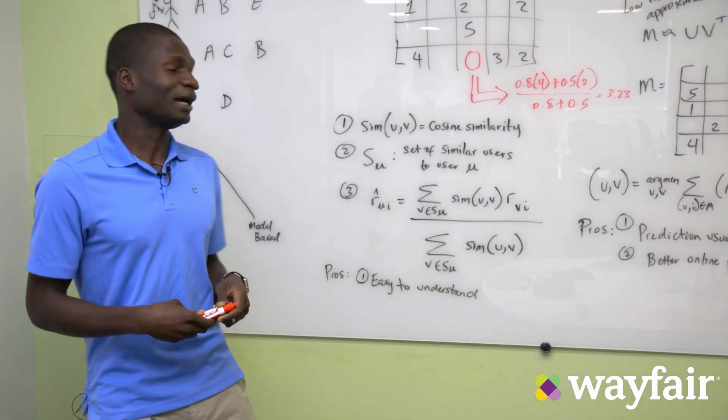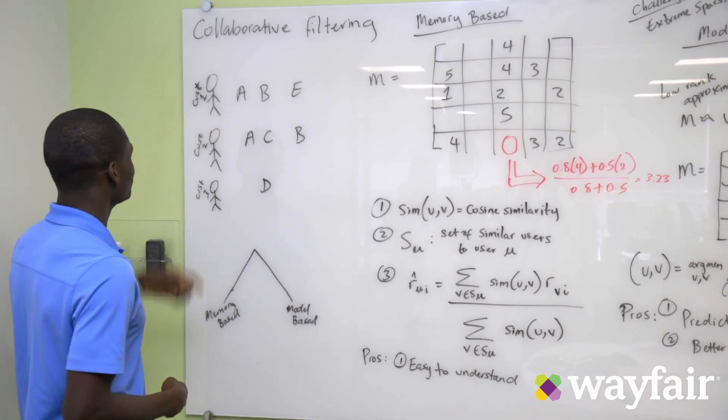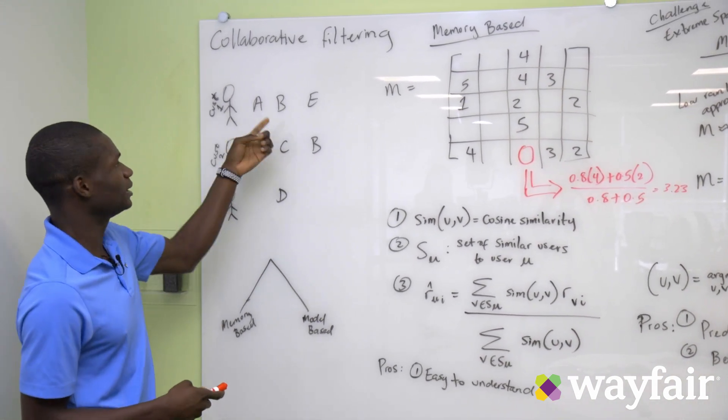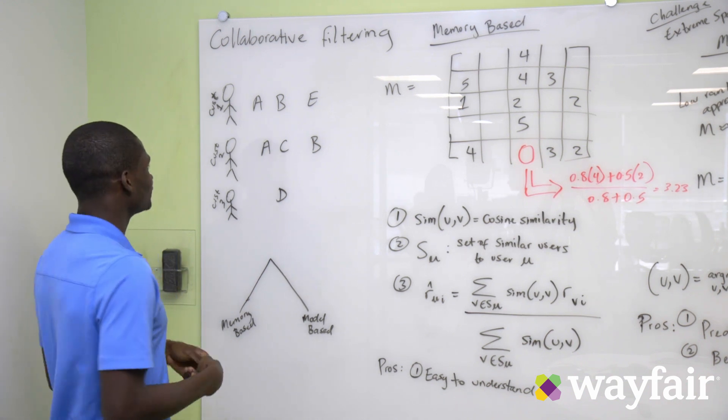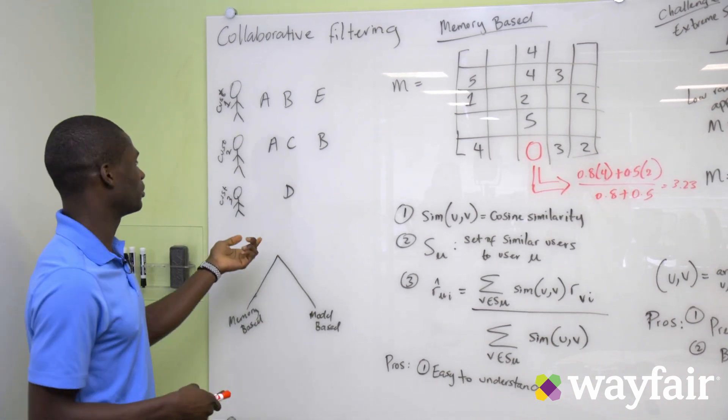For example, we could think of if we have three customers at Wayfair and if customer 1 buys product ABE, customer 2 buys product ACB and customer 3 only bought product D.